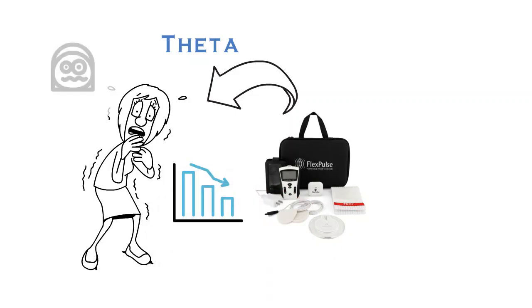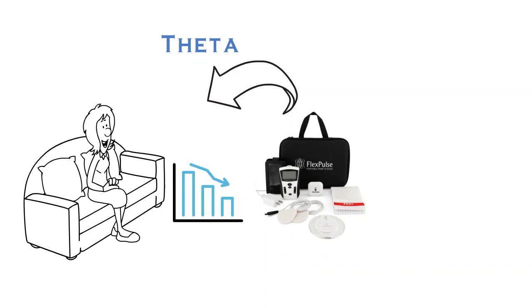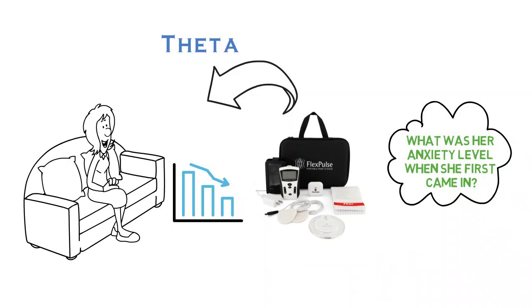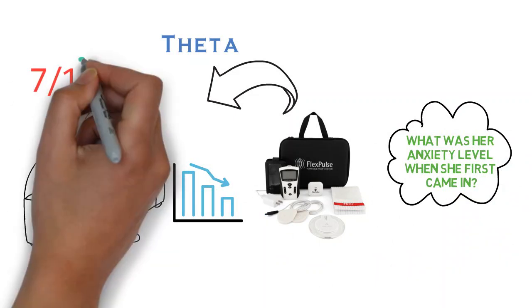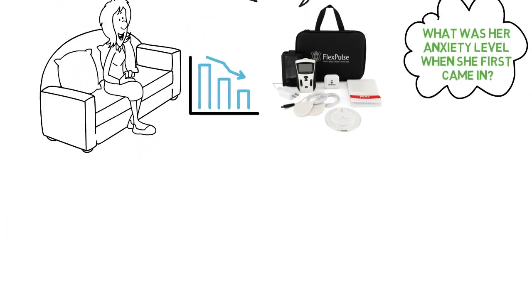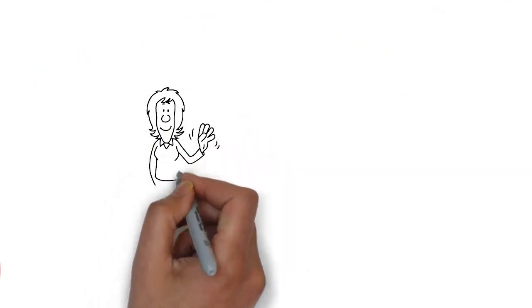You could literally see the elevator going down. Within about five minutes of putting it on the back of her neck, she sat down and stayed sitting for the rest of the visit. I asked her at the end of the visit what was her anxiety level when she first came in. She said seven out of ten. As I often say, I can't imagine her being a 10 out of 10. She was already pretty agitated at seven. At the end of the session, her number dropped down to three just with tuning the brain with this magnetic therapy.